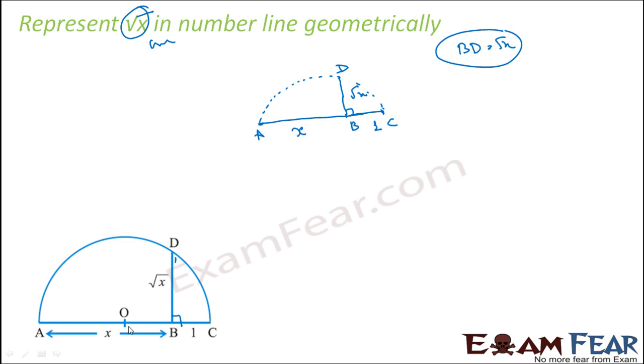So it will touch the semicircle at point D and BD will be root x. I can prove that. If this is x, this is 1, so the whole diameter is what? AC is x plus 1. So radius is x plus 1 by 2. And radius is my AO here and OC. AO and OC are my radius.